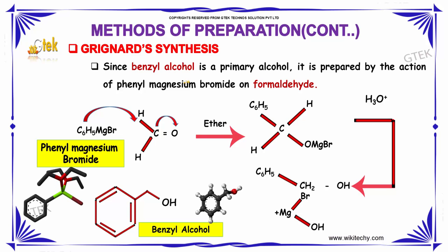Further, let us study the Grignard synthesis. Grignard synthesis is a primary method for the preparation of benzyl alcohol, which is a primary alcohol. It is prepared by the action of phenyl magnesium bromide on formaldehyde — the MgBr attacks the carbon and removes the double bond between carbon and oxygen.